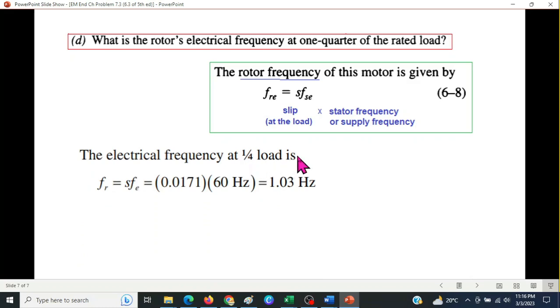So at one quarter of the load, FR or simply FR will be equal to S times FE or the electrical frequency. S we had already calculated 0.0171, FE in the question is given 60 hertz. So the new electrical rotor frequency will be 1.03 hertz.